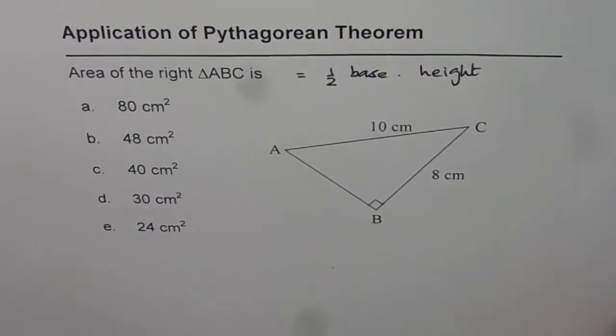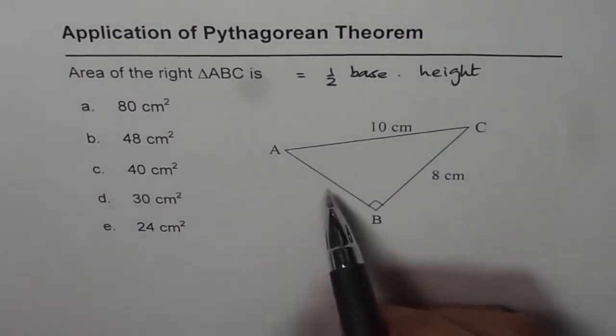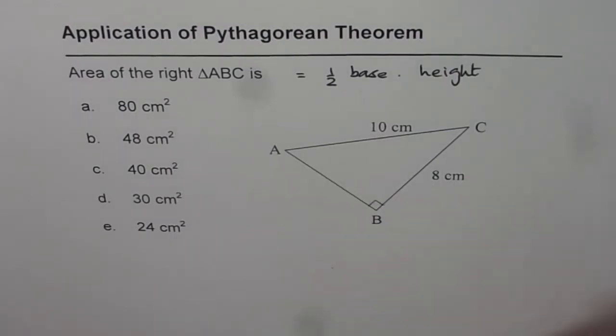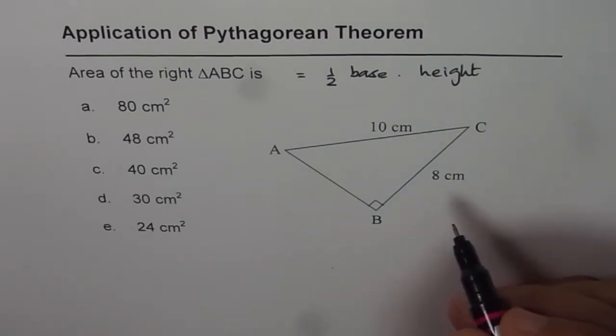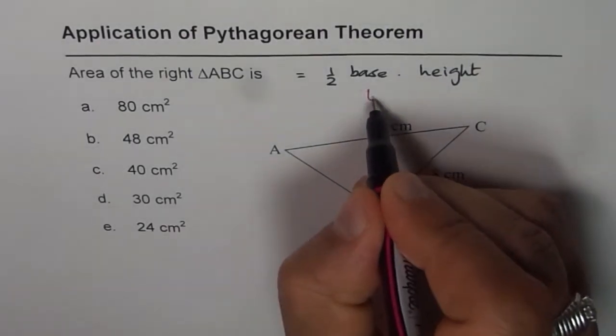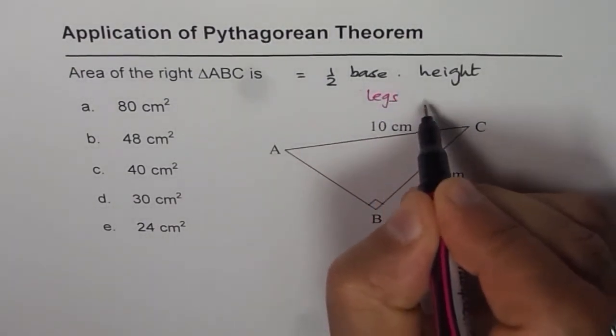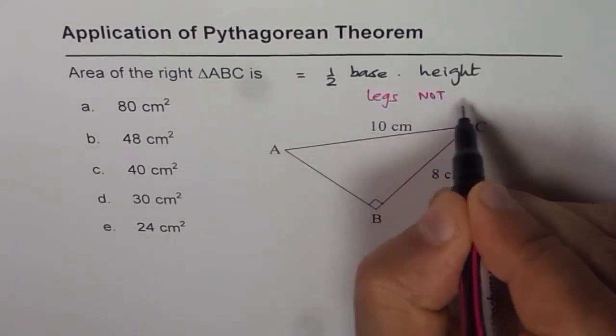Now what are these two sides? These two sides are the sides of the triangle which do not include the hypotenuse. So we are considering the two legs of the triangle. These are the legs, not the hypotenuse.